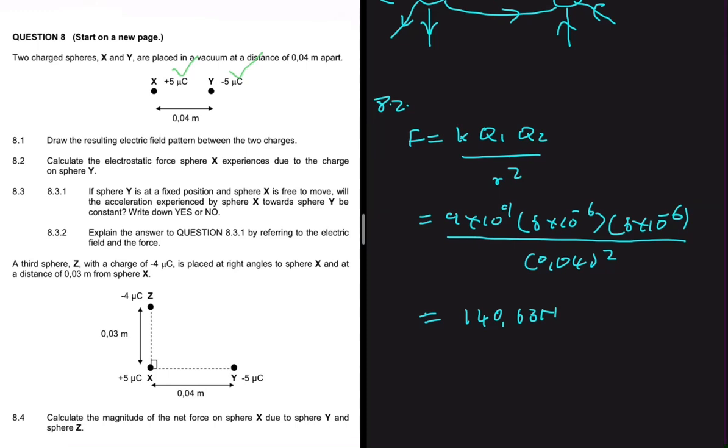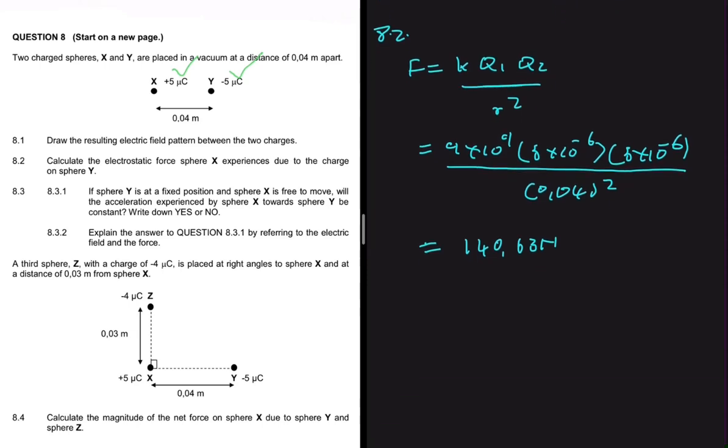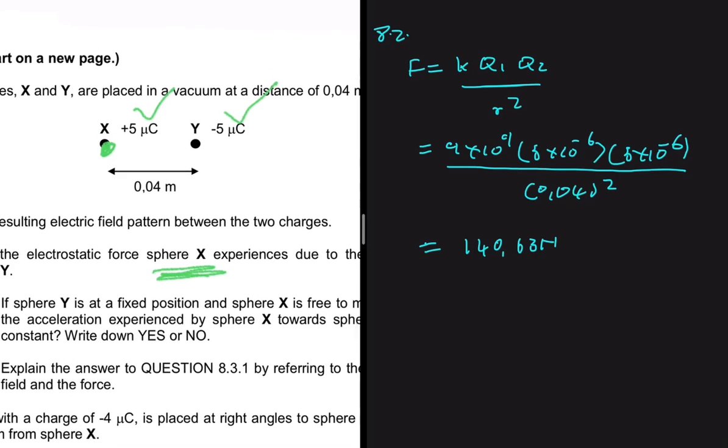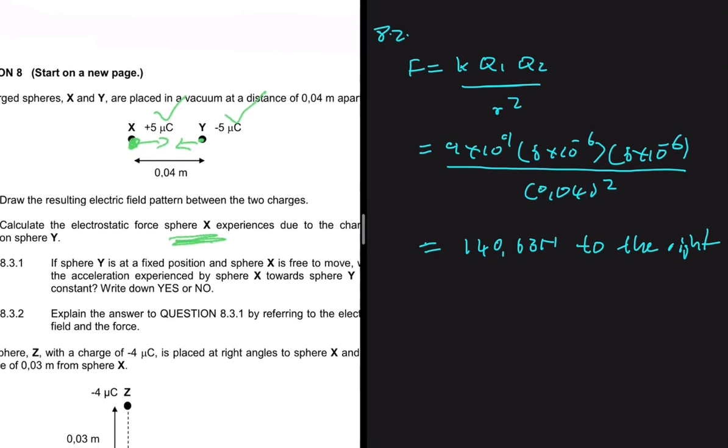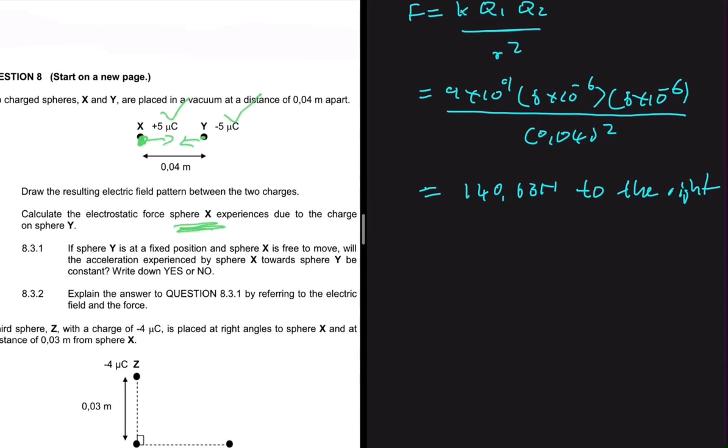And then now we can think about the direction. We're looking for the electrostatic force that sphere X experiences. Because they're going to attract, it means that sphere X is going to move towards Y while Y moves towards X. So we can see there that the force of Y on X will be to the right. So the electrostatic force will be to the right. If we're interested in the force on Y by X, it will be to the left instead.